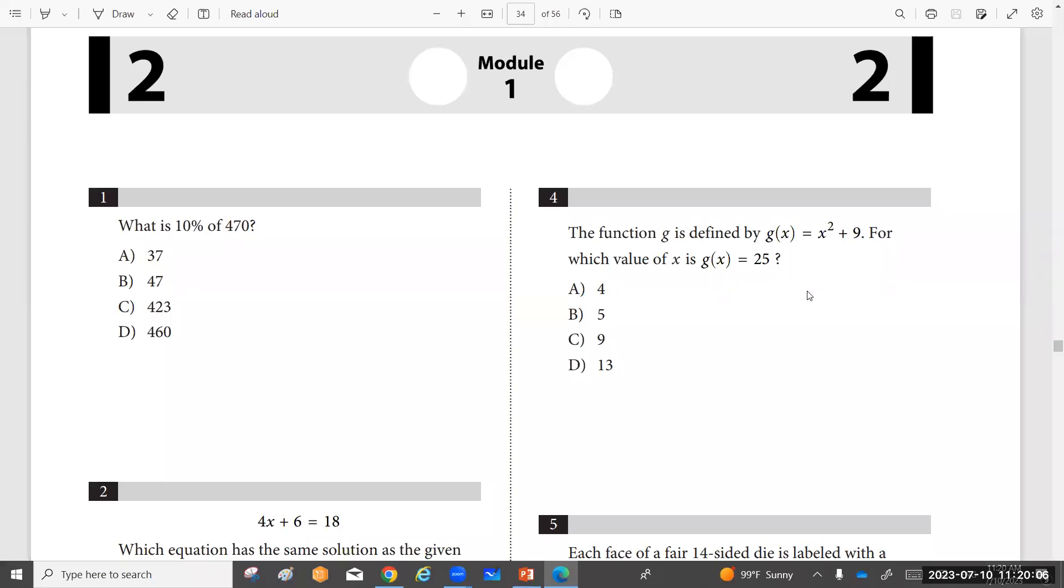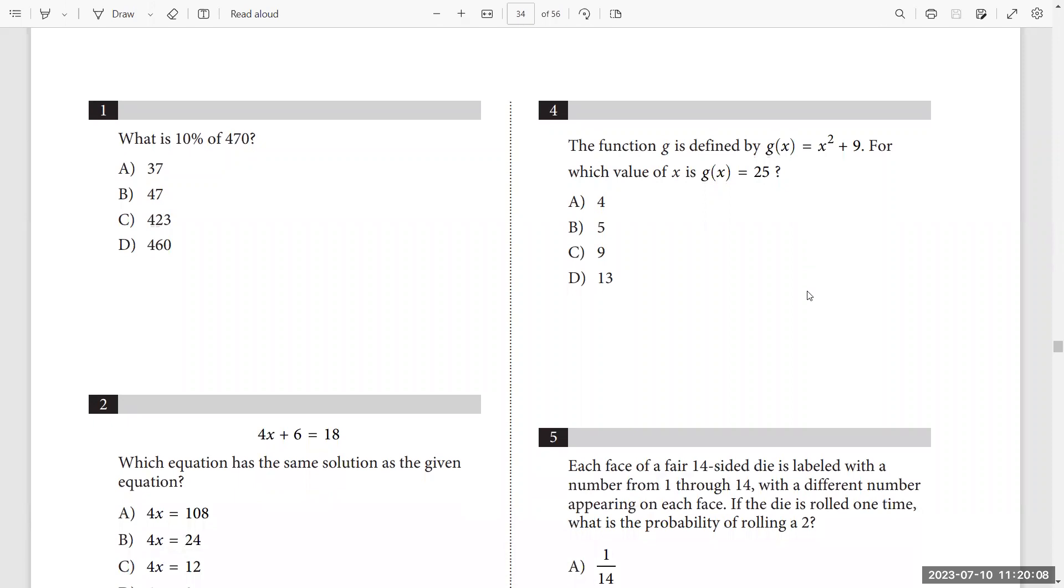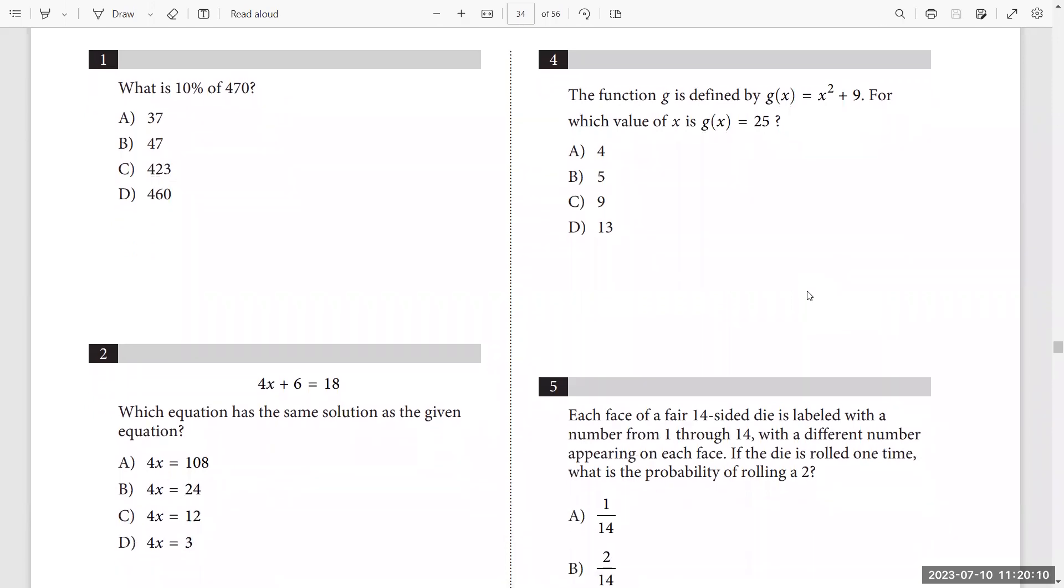Hello, everyone. SAT exam module number one. Question number one: What is 10% of 470? A percentage of a number. Just write the percentage 10 over 100 multiplied by 470. This is the answer. Divide by 10, cancel 10 and cancel another 10. The answer is 47.